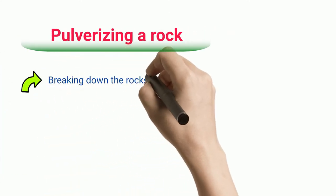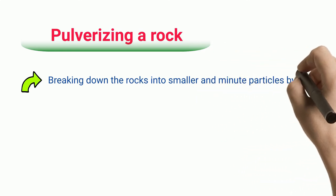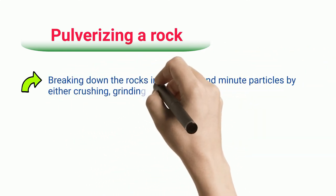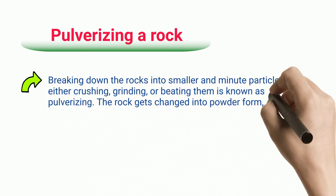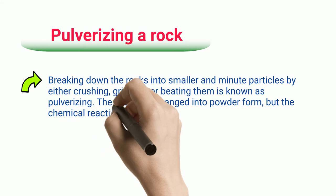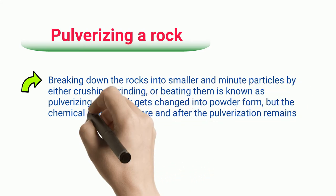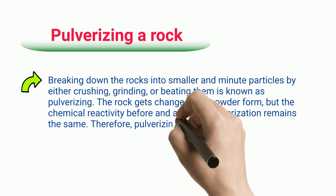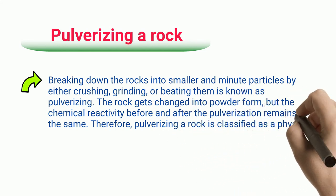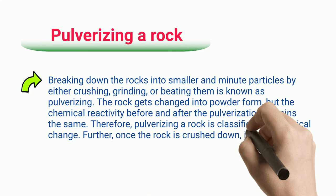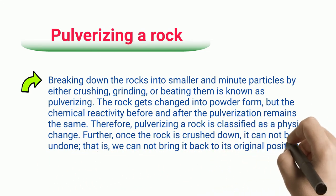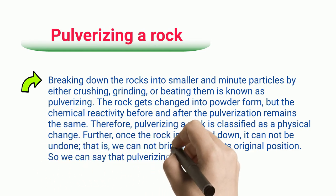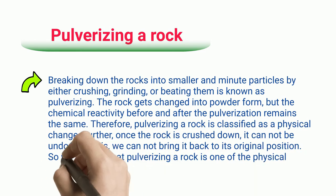Pulverizing a Rock. Breaking down the rocks into smaller and minute particles by either crushing, grinding, or beating them is known as pulverizing. The rock gets changed into powder form, but the chemical reactivity before and after the pulverization remains the same. Therefore, pulverizing a rock is classified as a physical change. Further, once the rock is crushed down, it cannot be undone — we cannot bring it back to its original form. So pulverizing a rock is one of the physical irreversible change examples.